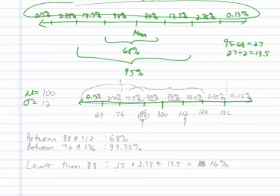0.15, 2.35, 13.5, 34, and then reverse that.